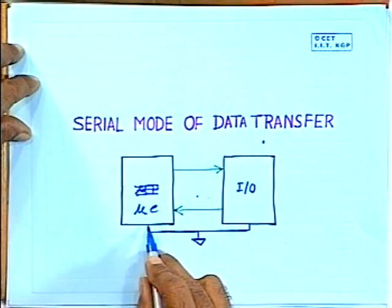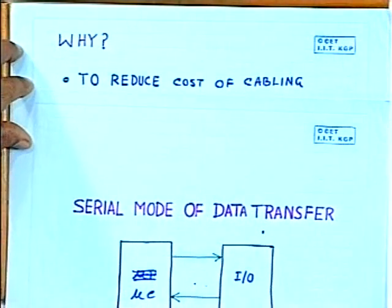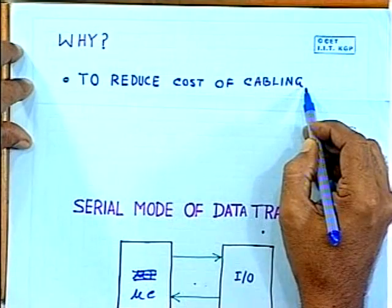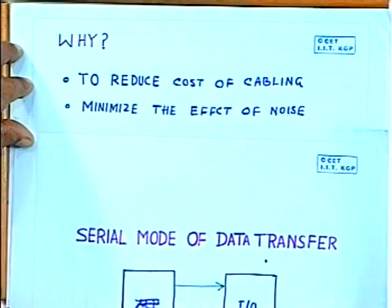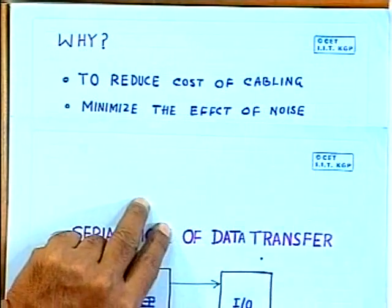From the microcomputer to the IO device, you will require a pair of lines and a common ground line. So the cost of cabling will be reduced if you use serial mode of data transfer. Second reason: whenever you bunch a number of cables together, the current flowing in one pair of cables induces some signal in other wires — commonly known as crosstalk in telephone networks. To reduce crosstalk, serial mode is preferable because you are using only a pair of wires, which minimizes the effect of noise.